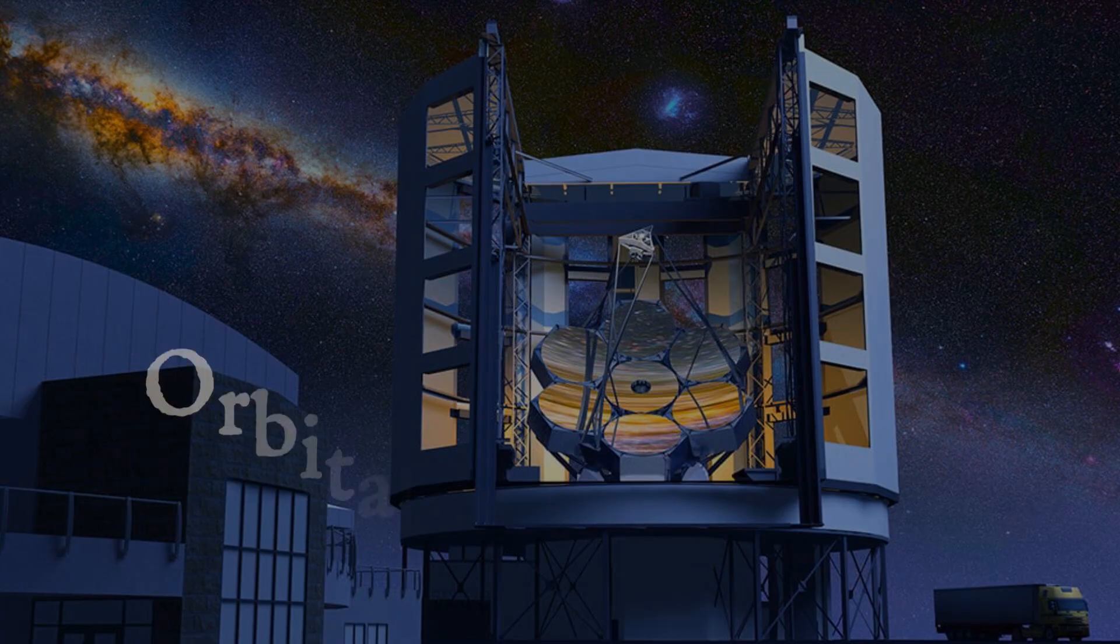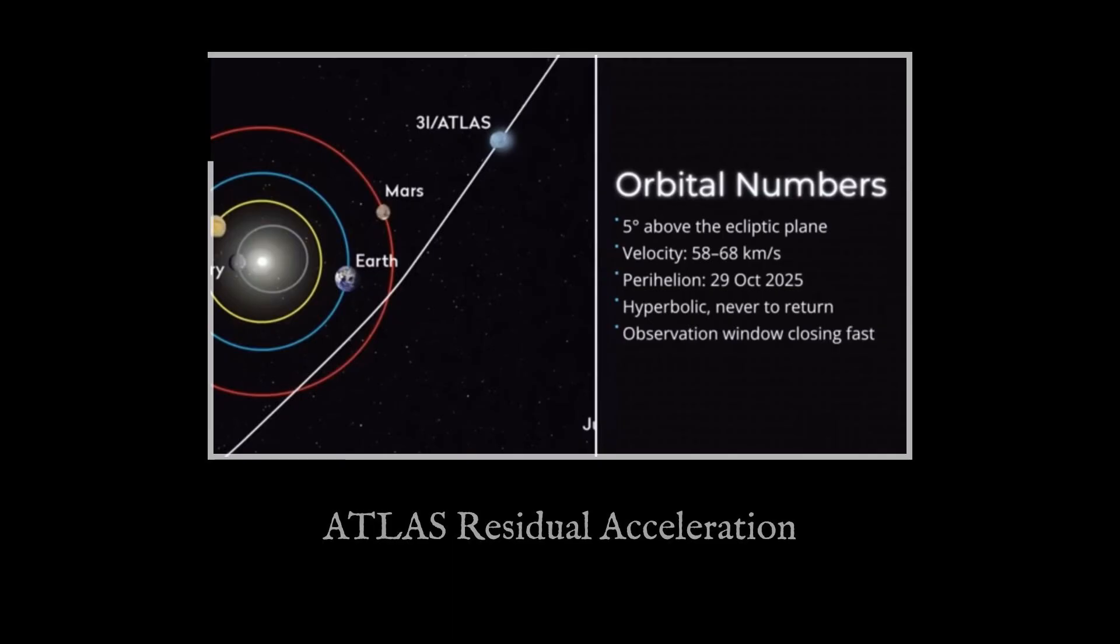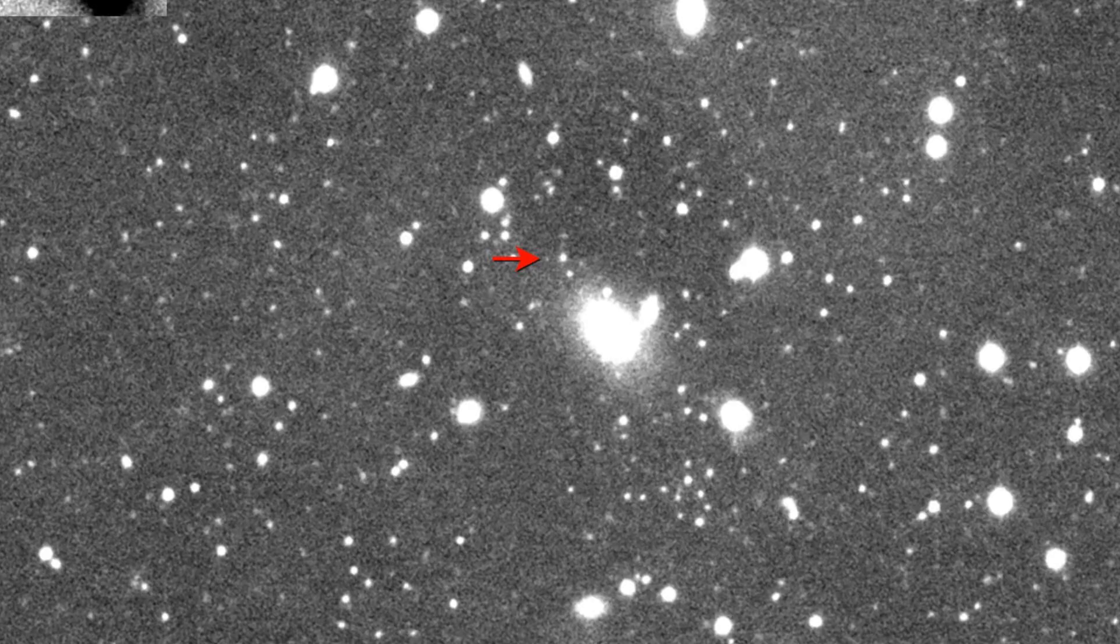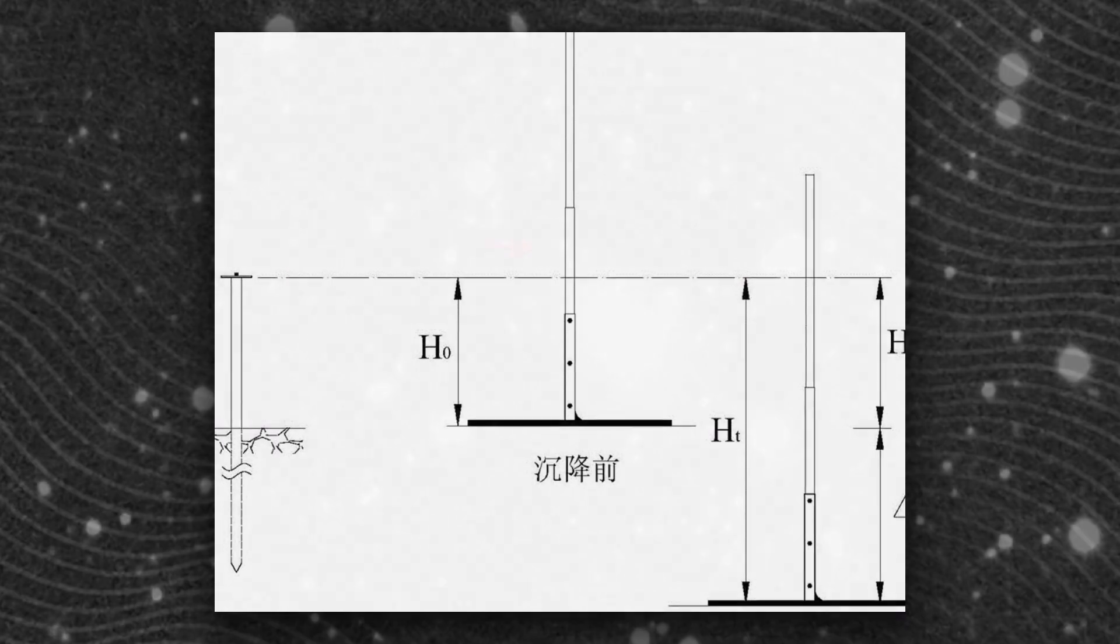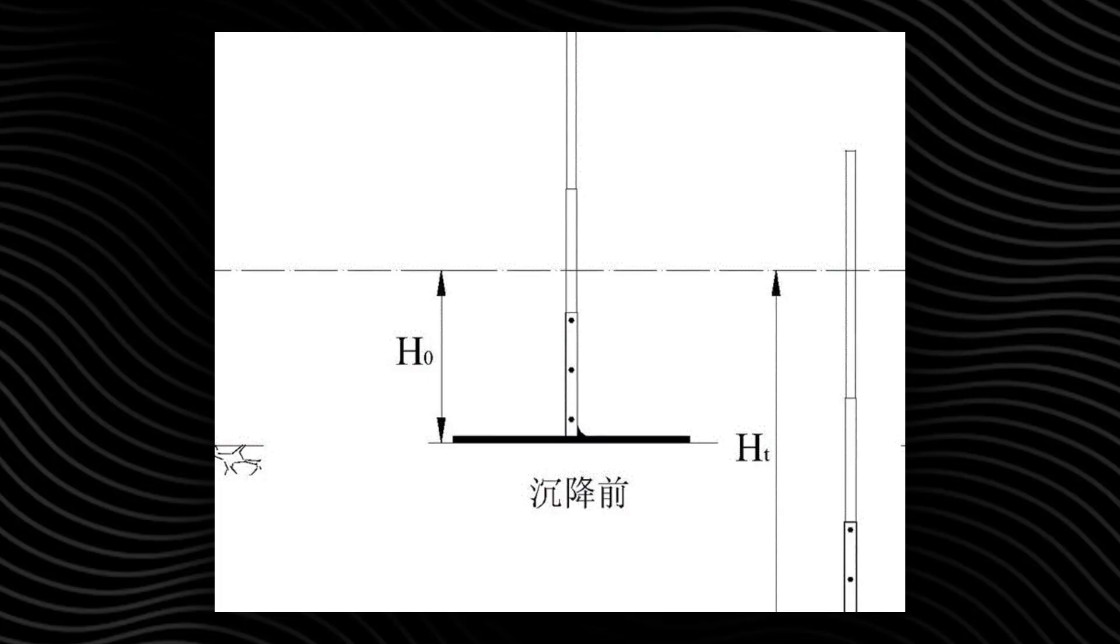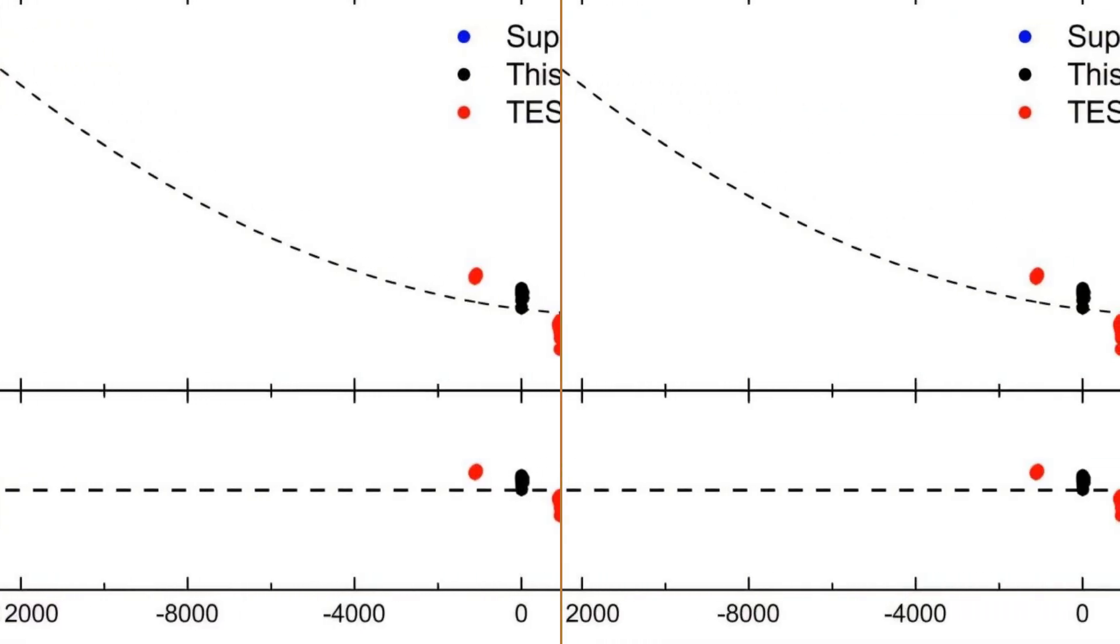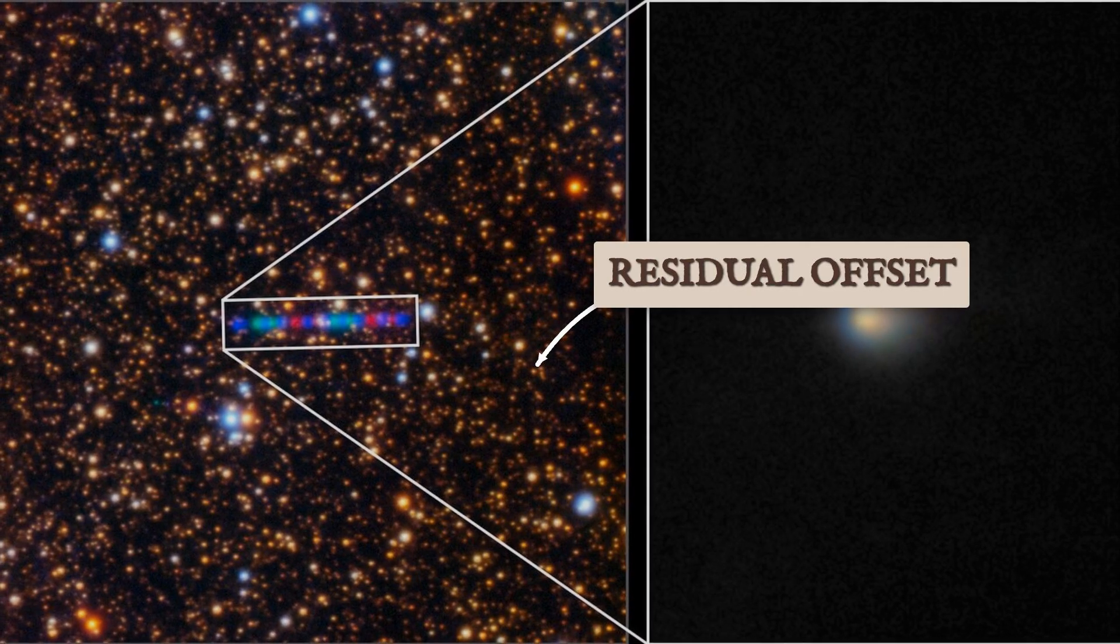So what did scientists actually measure? Orbit analysts working with the latest astrometric data found that 3I Atlas, as it swept through perihelion, did not follow the precise path predicted by gravity alone. The object's measured positions, tracked against background stars with sub-arc-second accuracy, showed a consistent, statistically significant offset. This offset, known as the residual, is the difference between where the object should be and where it actually appeared in the sky.